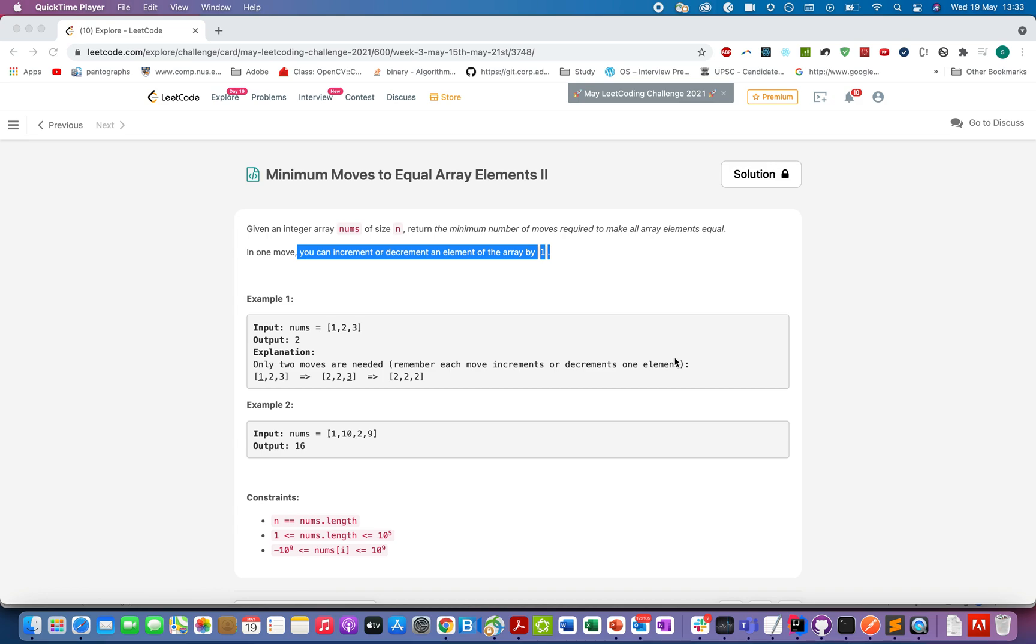Hello everyone, welcome to day 19th of my LeetCode challenge and today's question is minimum moves to equal array elements 2. In this question we are given an array of size n and we need to return the minimum number of moves required to make all the elements of the array equal.